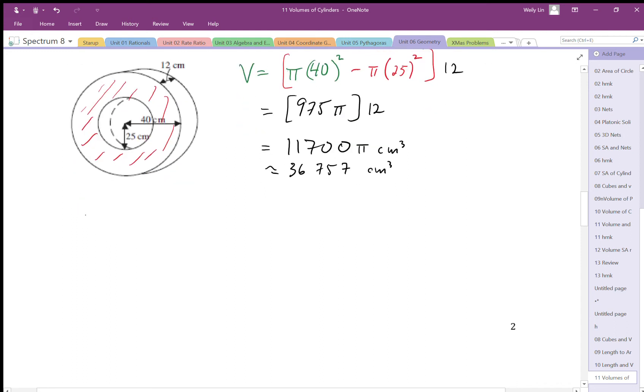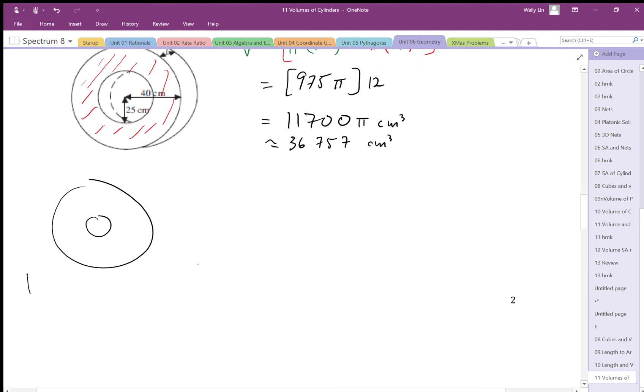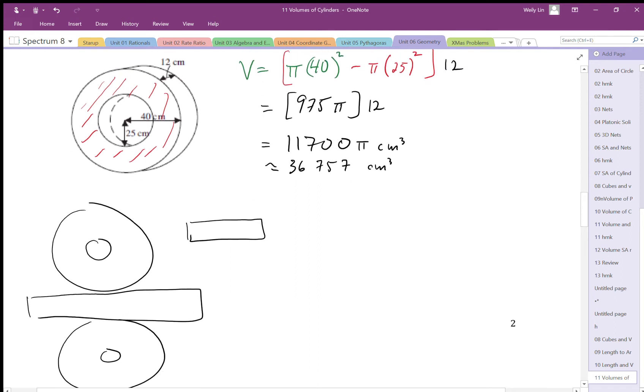I think we did the surface area for this problem before, but we need to make sure we can draw a net of this. Although we can't actually draw a proper net because we can't attach that inside surface to that side surface. We already worked out the surface of this donut shape here. That was 975π.